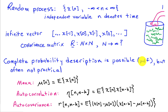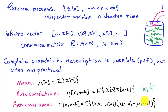There's a lag of k samples between x of n and x of n minus k. The autocovariance is defined like the autocorrelation, except we subtract off the mean. So we take x of n minus its mean and look at how that varies on average with the value k steps away, also subtracting the mean there. If the mean of a process is zero — in other words, mu of n and mu of n minus k are both zero — then the autocorrelation and the autocovariance are identical.